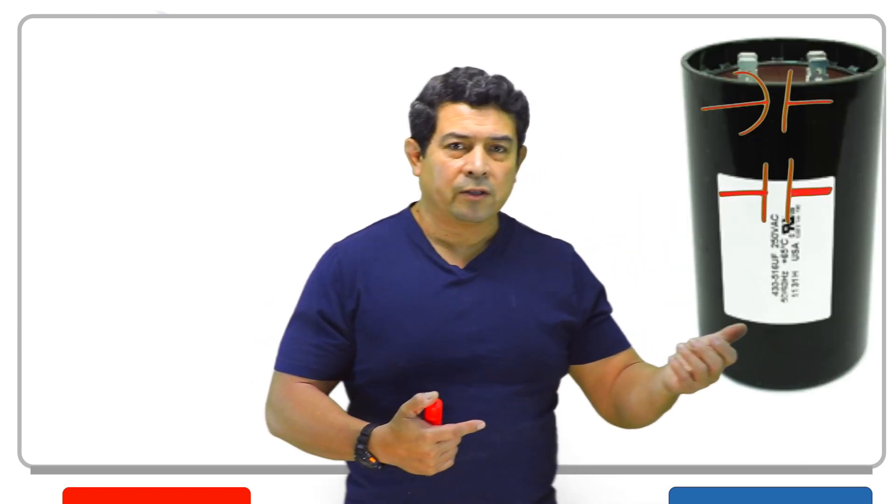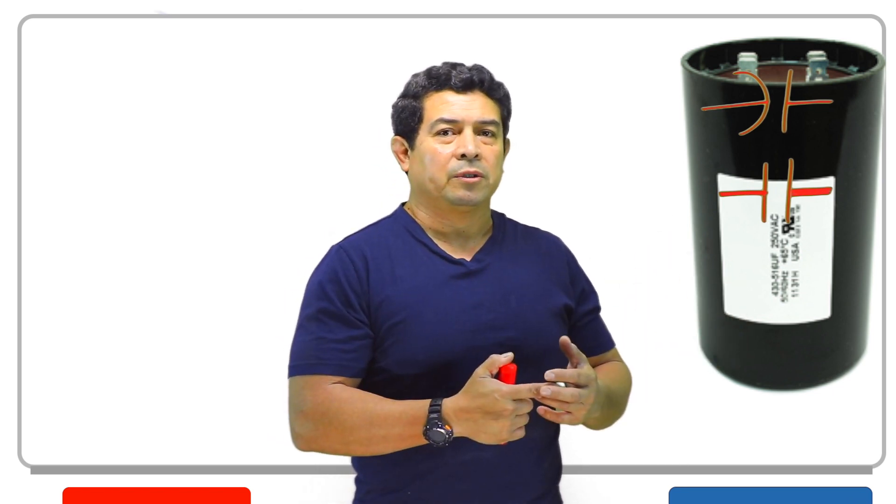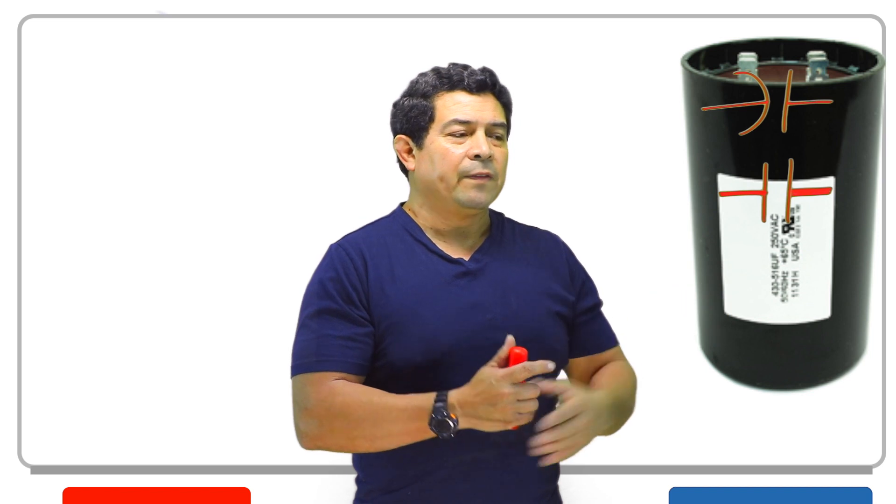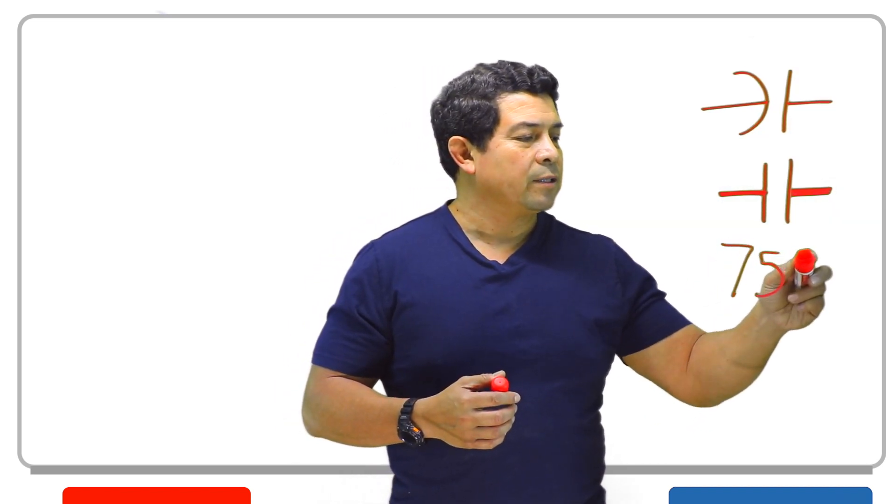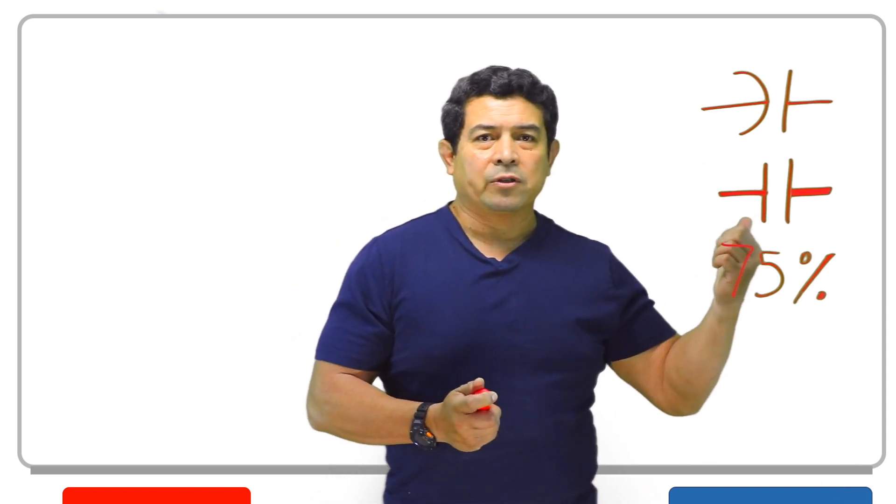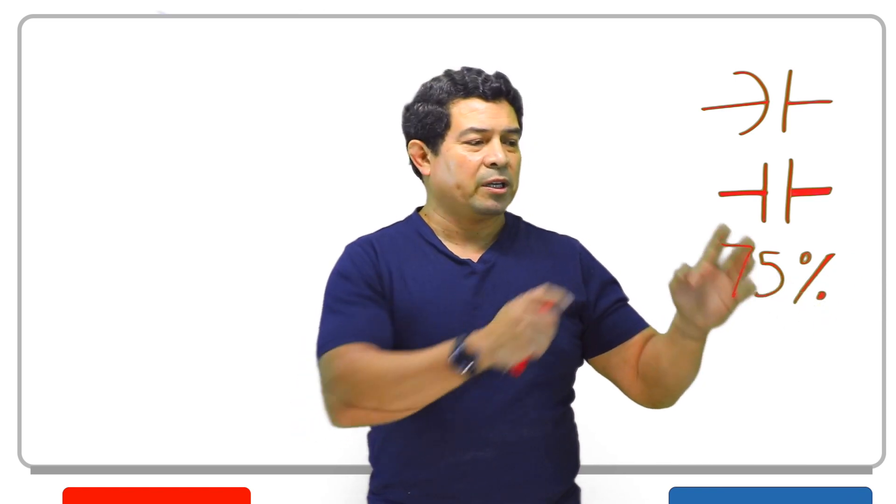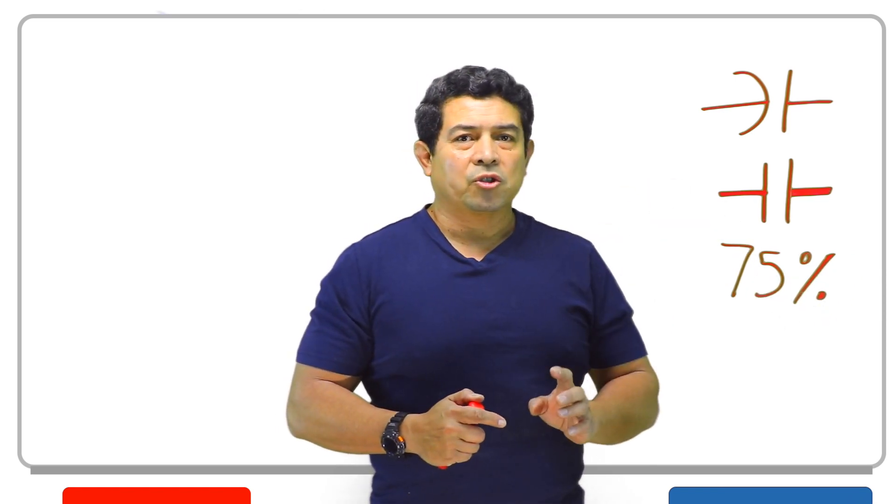On the other hand, the start capacitor is going to be only used when it starts up. And then, once it starts up, at about 75% of the motor speed, it's going to be taken out of the circuit. They're going to take the capacitor completely out because it is a start capacitor. It's only used on startup.